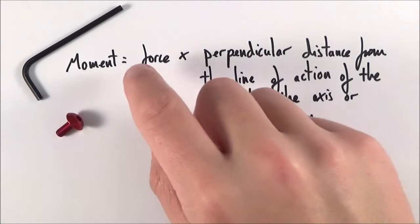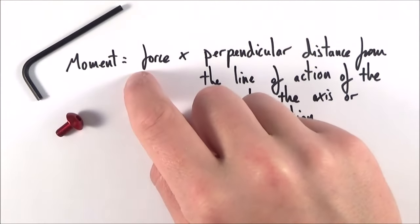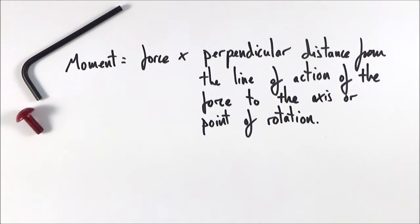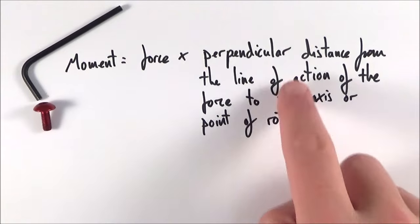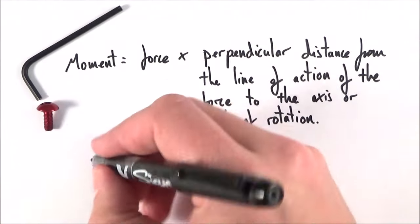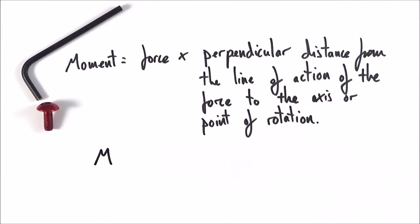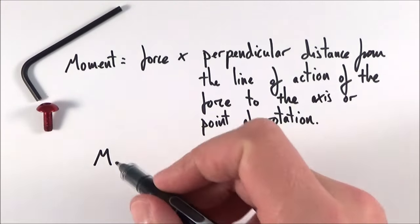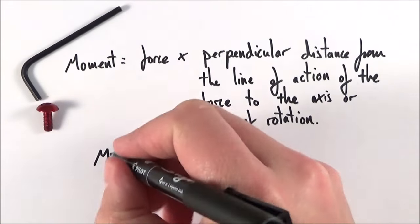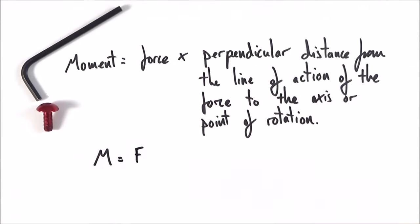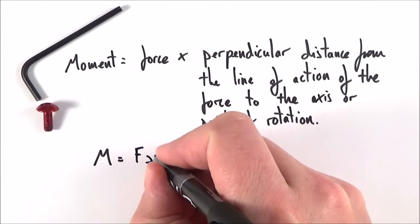The textbook definition of a moment is the force multiplied by the perpendicular distance from the line of action of the force to the axis or point of rotation. In terms of symbols, we use a capital M for moment — lowercase m stands for mass — and this is equal to the force F multiplied by the distance X.